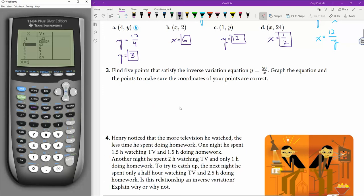Find 5 points to satisfy the inverse variation equation. y equals 20 over x. Okay. Let's do 1. 20 divided by 1 is 20. So when x is 1, y is 20.